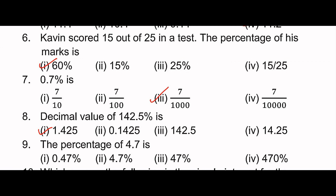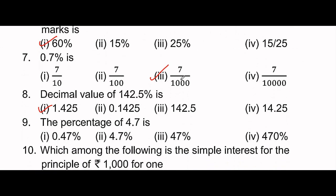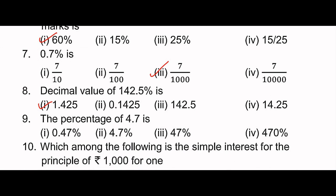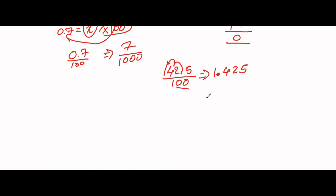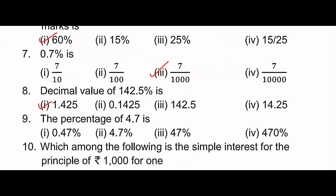Next: the percentage of 4.7. To convert 4.7 to a percentage, we multiply by 100: 4.7 into 100 equals 470. So the answer is 470 percentage. Fourth option.